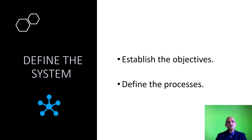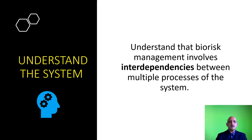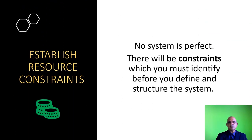Let us go into the system itself. The first aspect is defining the system, which involves establishing the objectives and defining the processes. The second aspect involves structuring the system — organizing it so as to achieve the objective in the most efficient manner. Understanding the system involves interdependencies between multiple processes, and this is where your role as a Biorisk Manager is critical. You need to observe situations as they occur, document these processes, and then apply corrective action. This is where you have continual improvement — what we call CQI, continuous quality improvement. Resource constraints must also be established and discussed with your top management.